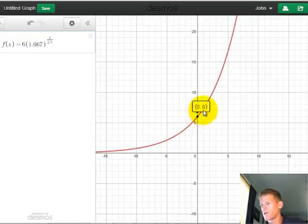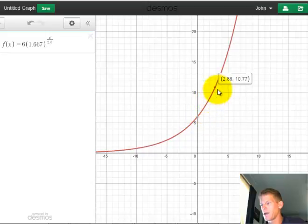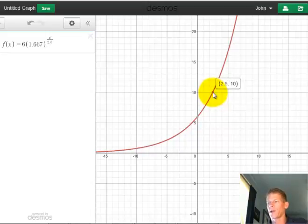And now if I scroll and I look at where I'm at at 2.5, 2.5 puts me at, there you go, 2.5 comma 10. Hopefully you can see that.